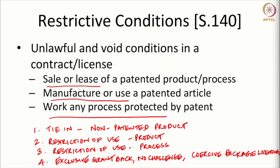The fourth pertains to exclusive grant-back, requiring the licensee to exclusively grant back improvements, or a clause saying that there will not be any challenge to the patent, or coercive package licensing where licenses are clubbed and packaged together such that you can only take the entire package even if you need only one or two patents. All four of these types of restrictions are treated as unlawful and void.